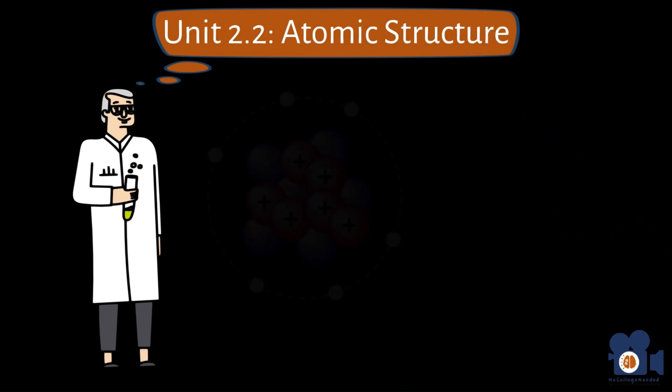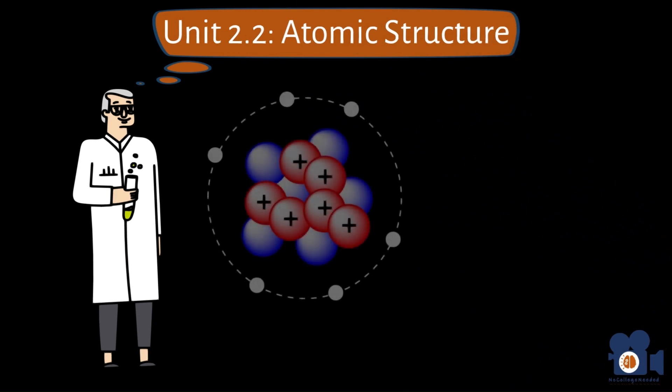In the last unit, 2.1, we discussed John Dalton and his four rules for atomic theory. These rules were based on the tests and observations he made in his laboratory. However, he never published any proof that these atoms actually existed.